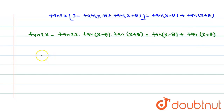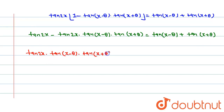So we can write tan(2x) into tan(x − θ) into tan(x + θ) is equal to tan(2x) minus tan(x − θ) minus tan(x + θ).